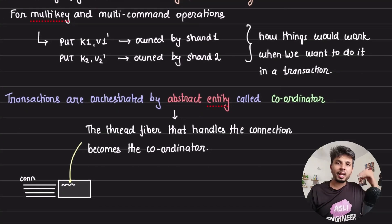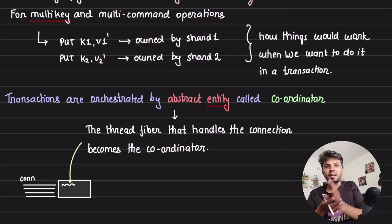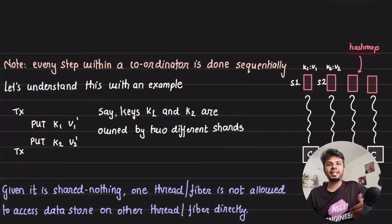When a client initiates a transaction on the Dragonfly server, it will be handled by a particular IO fiber that is dealing with this connection. This fiber becomes the coordinator. This coordinator is the one who will take care of the entire transaction lifecycle from beginning to end.